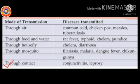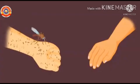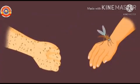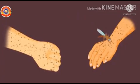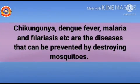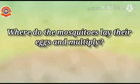Diseases transmitted through mosquitoes include filariosis, malaria, dengue fever, and chikungunya. The next mode of transmission is through contact — diseases transmitted by contact include conjunctivitis and leprosy. Diseases that can be prevented by destroying mosquitoes include chikungunya, dengue fever, malaria, and filariosis. Where do mosquitoes lay their eggs and multiply?